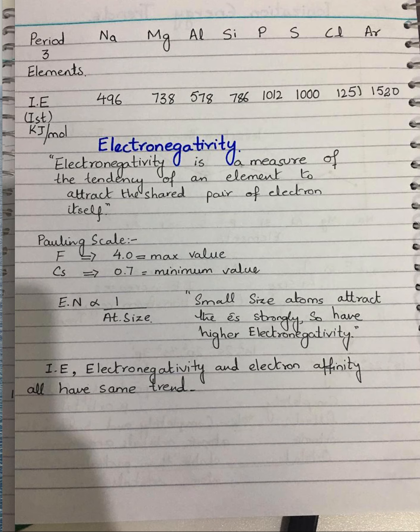With period number three elements, sodium has got the lowest ionization energy among period number three elements: 496. Magnesium is 738. Looking at this period, sodium, magnesium, and aluminium — these three metals — their ionization energy value is comparatively low relative to the rest. They are metals, and they have low ionization energy because they have the tendency to lose electrons easily.